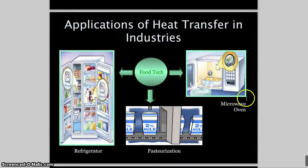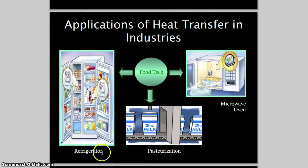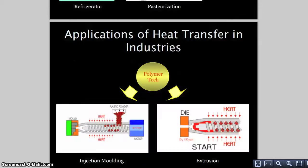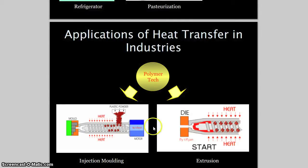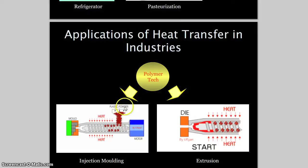In food tech, common applications include microwave ovens, pasteurization, and refrigeration — you'll learn more about refrigeration in thermodynamics. Another real-world application of heat transfer is injection molding: if you want to mold plastic into a specific shape, you add plastic powder, apply heat, and extrude it into a mold.